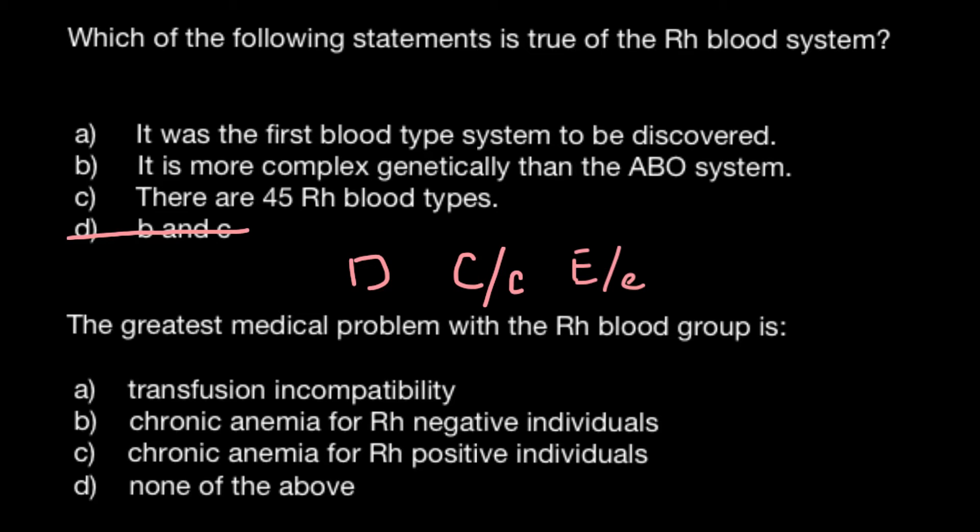If it is absent, we just don't put anything, or sometimes we can put small d here. But it doesn't mean a different allele or different variant of the same gene. In this case, small d means the absence of this gene.